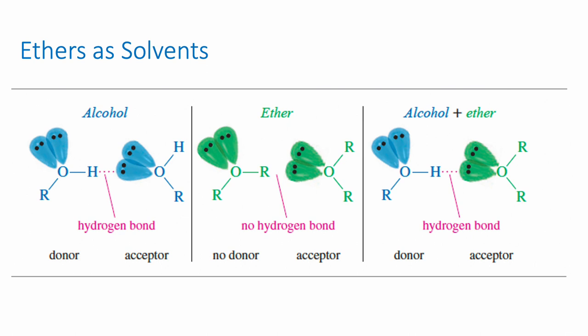Ethers don't have any hydrogen bond donors because there are no O–H bonds in an ether — only oxygen-carbon bonds. However, ethers do have hydrogen bond acceptors because they have two lone pairs on the oxygen atom. So if we put an ether and an alcohol together, the alcohol can be the hydrogen bond donor and the ether can be the hydrogen bond acceptor. They can hydrogen bond with other compounds that provide the donor; they just cannot hydrogen bond with each other. So a pure ether generally has a pretty low boiling point.